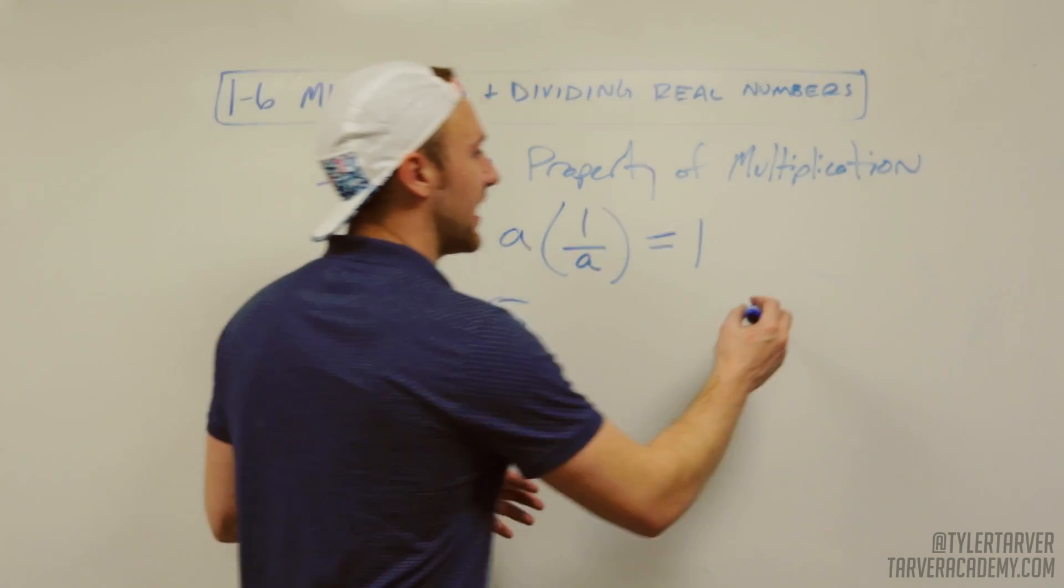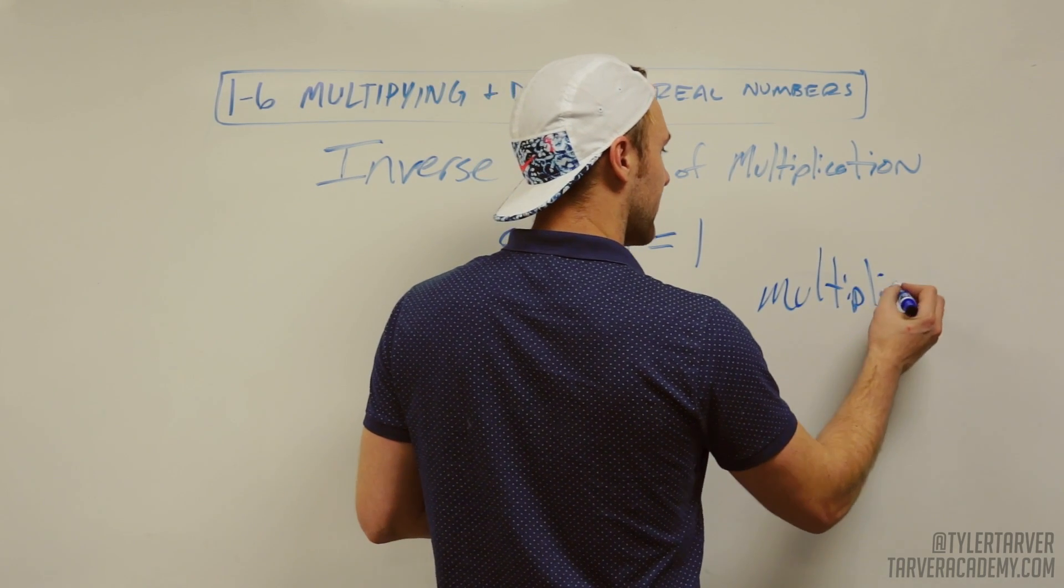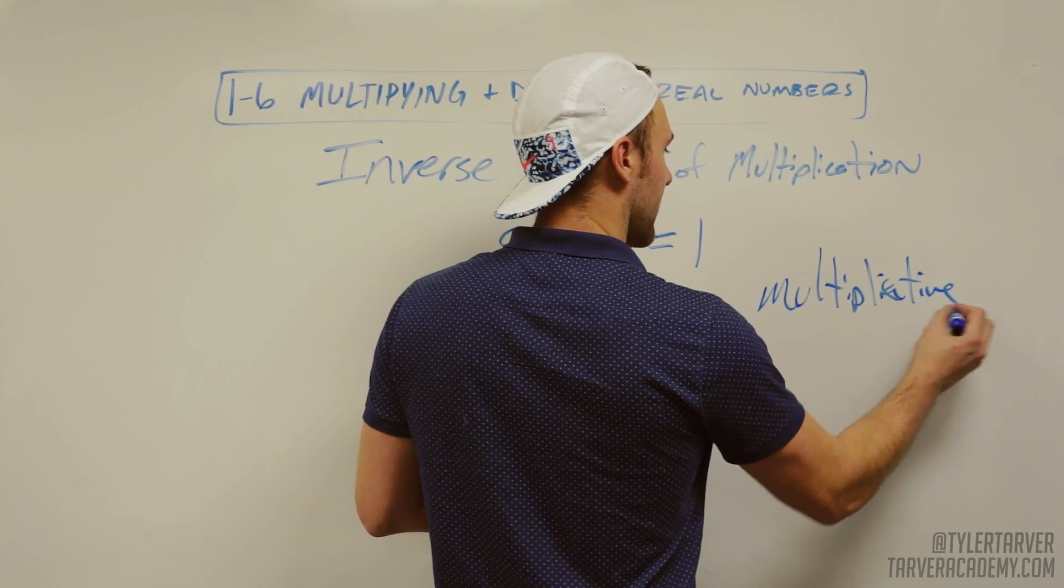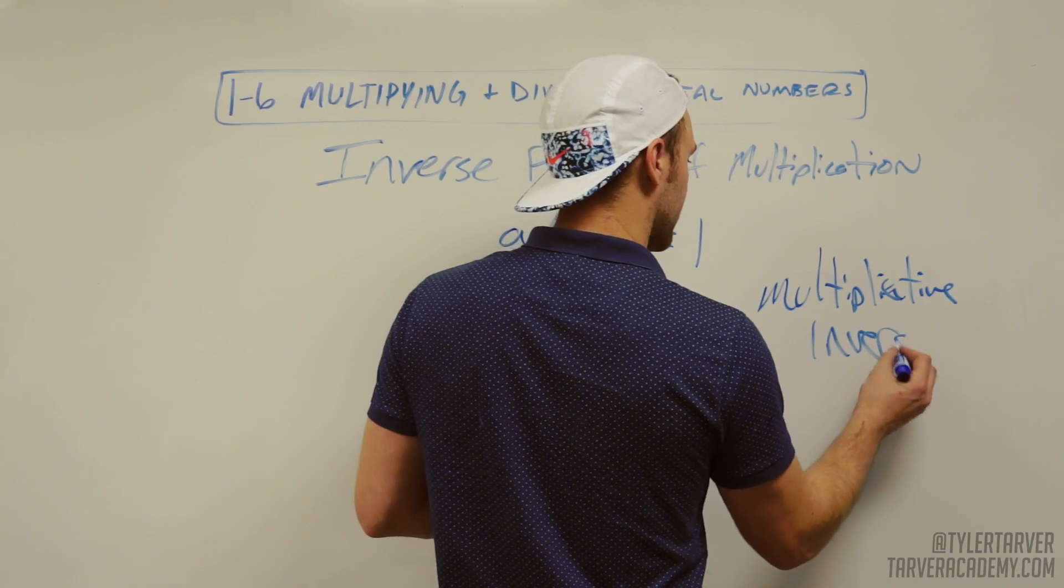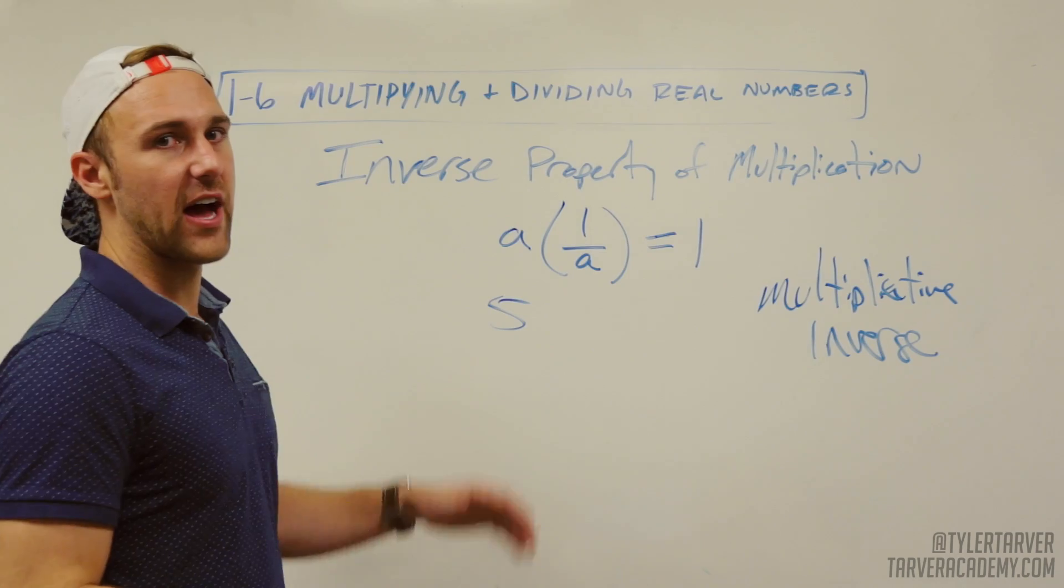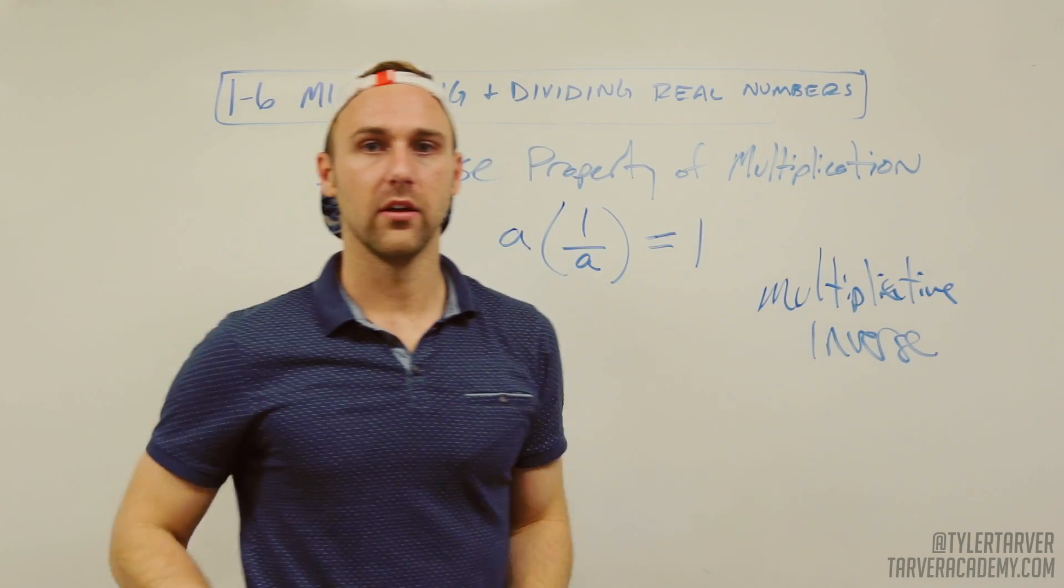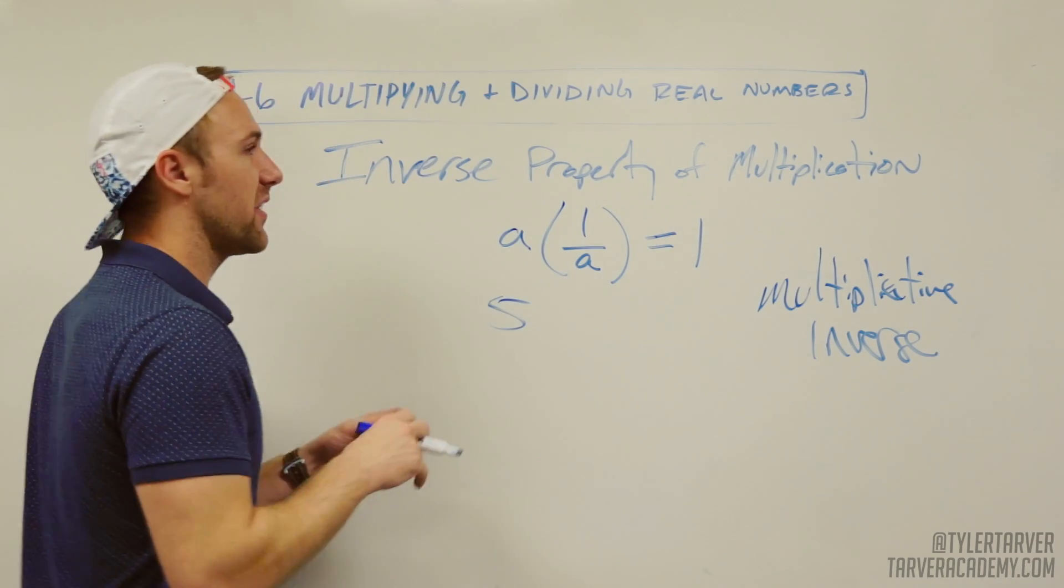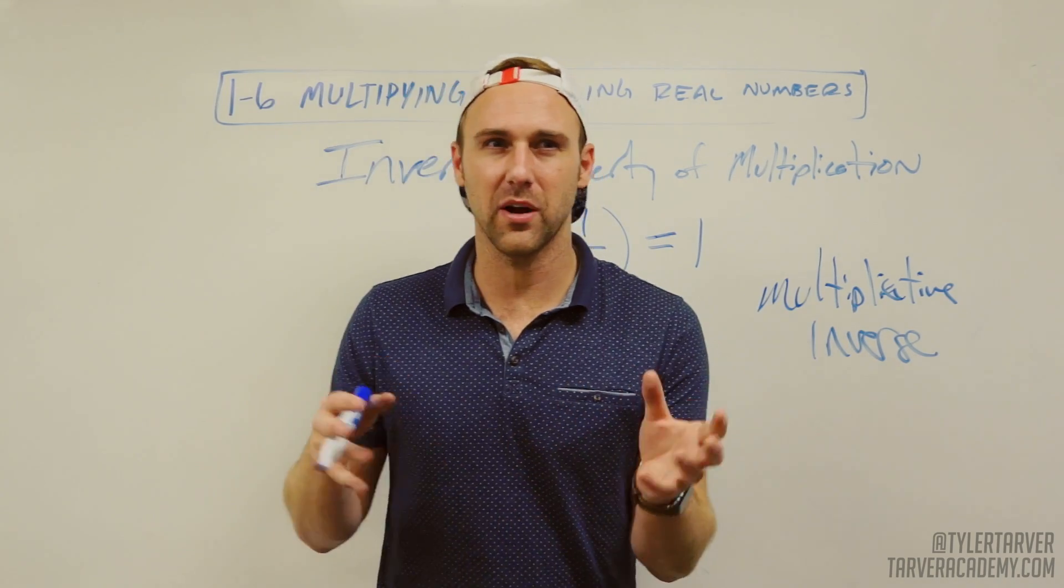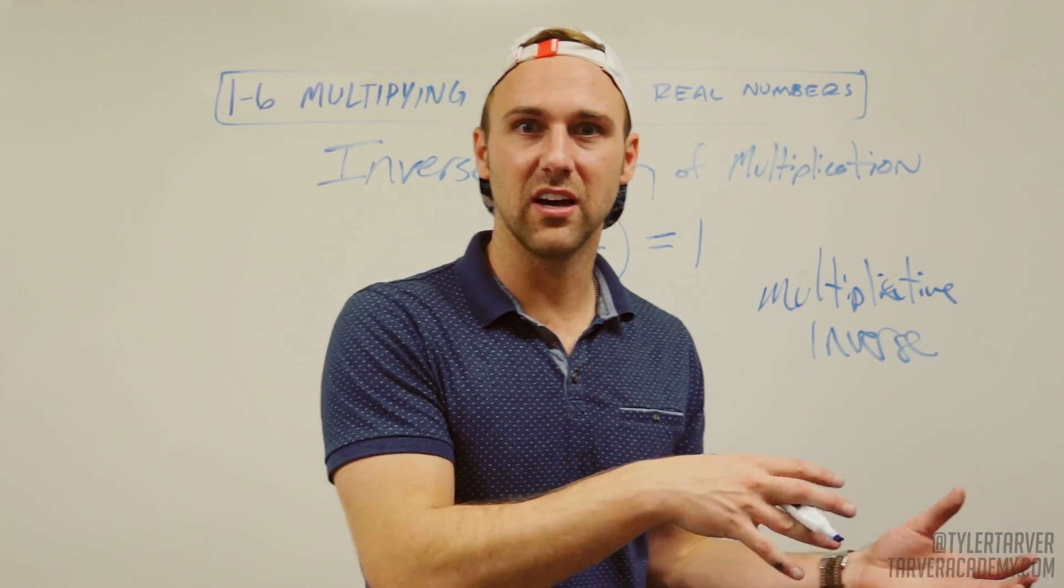We want to find the multiplicative inverse of that five, because essentially we want to know what do I multiply that by to equal one. That's what the multiplicative inverse is. Remember the identity property of multiplication. It's where you multiply something times one and it's going to equal itself.